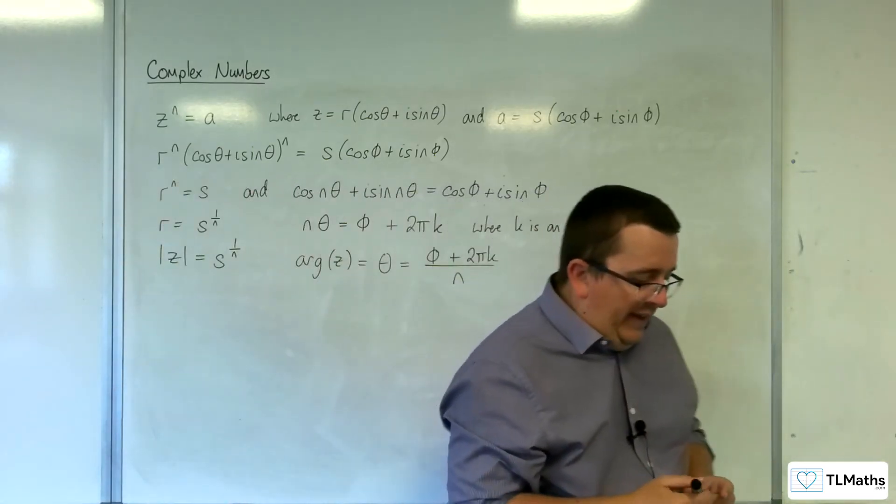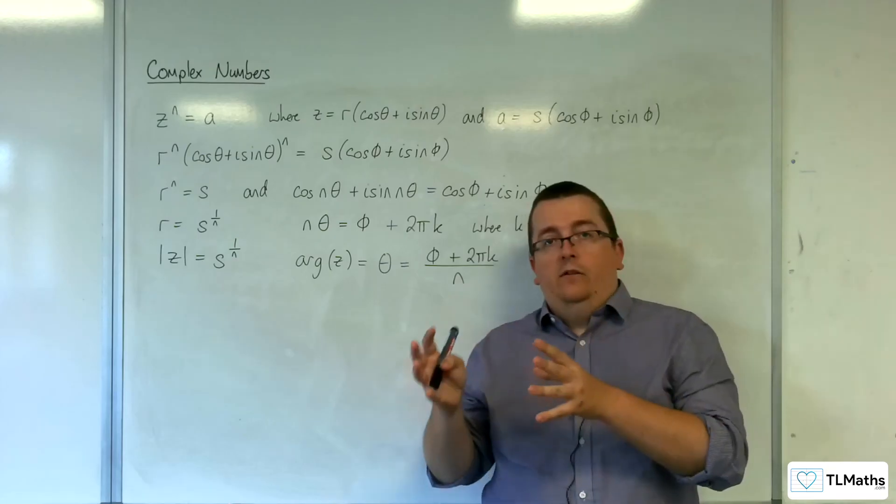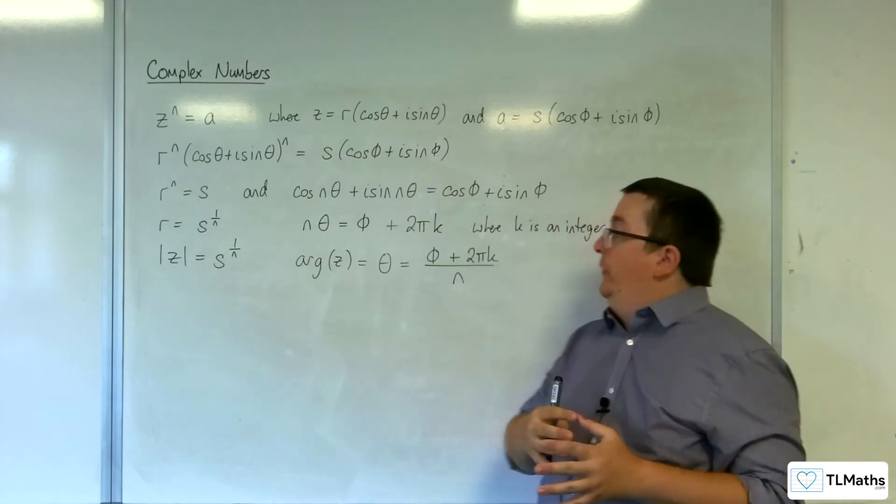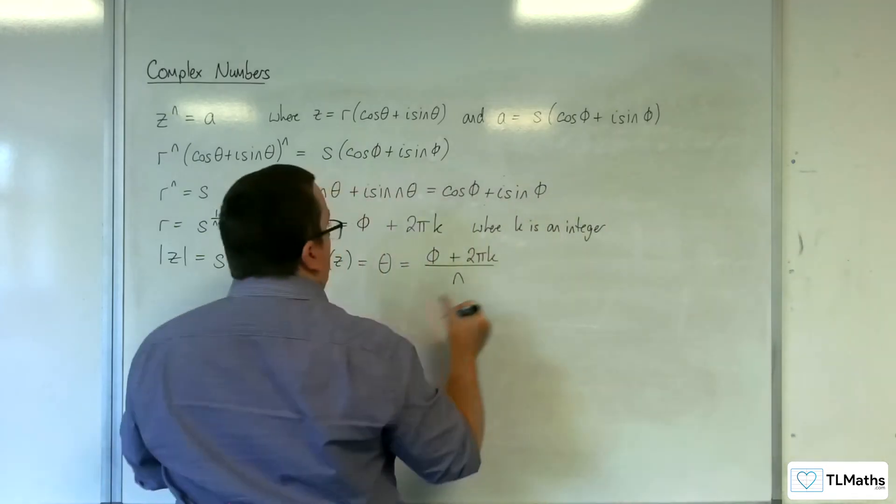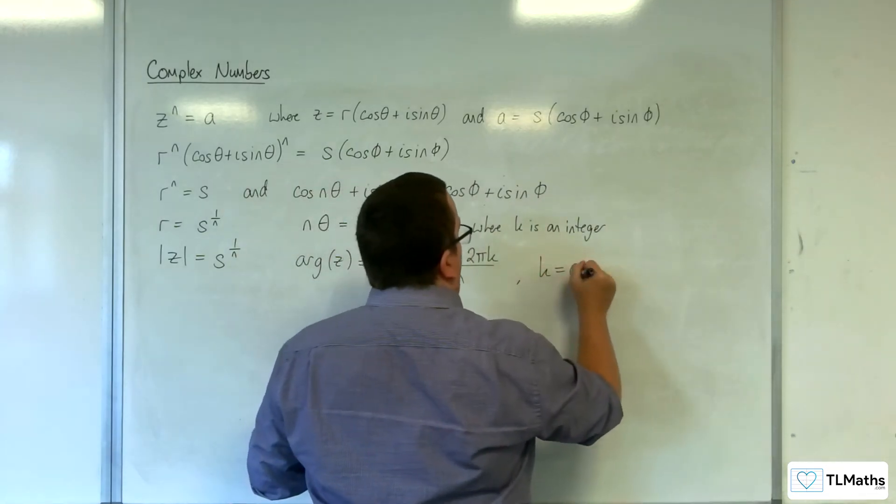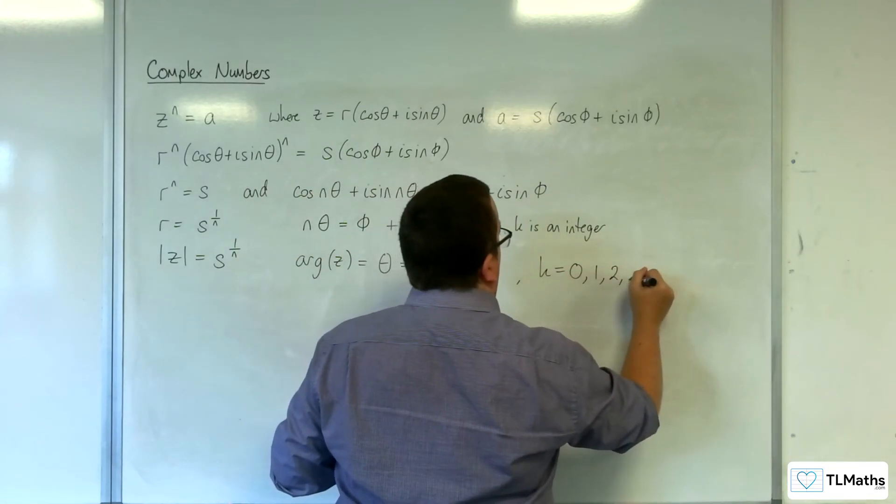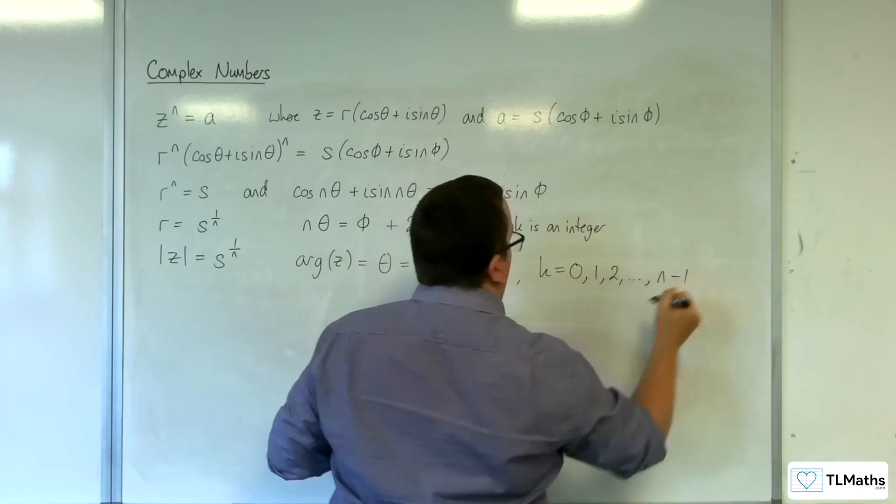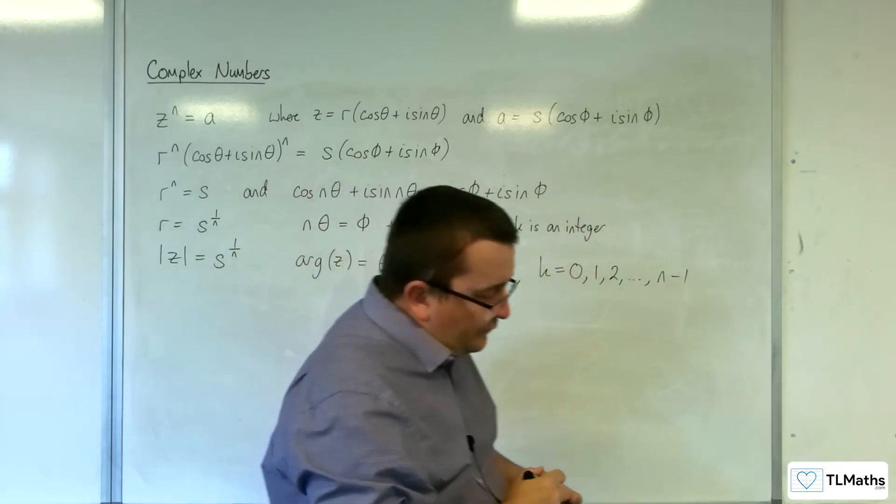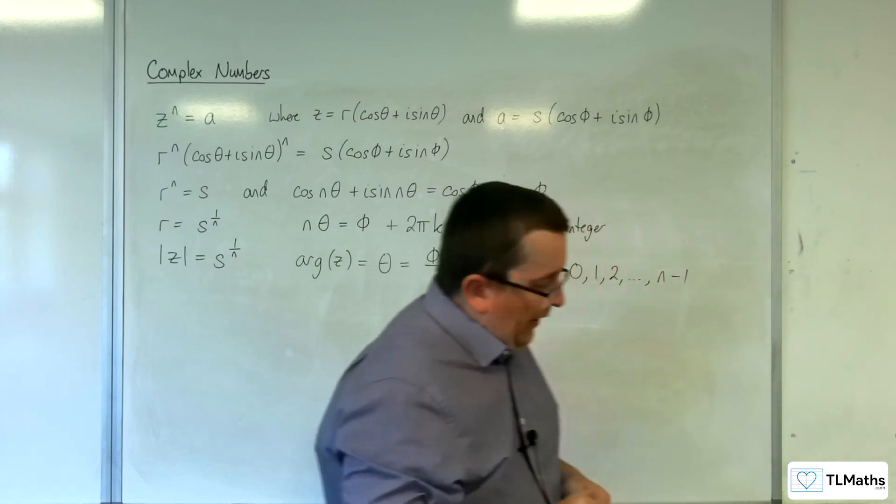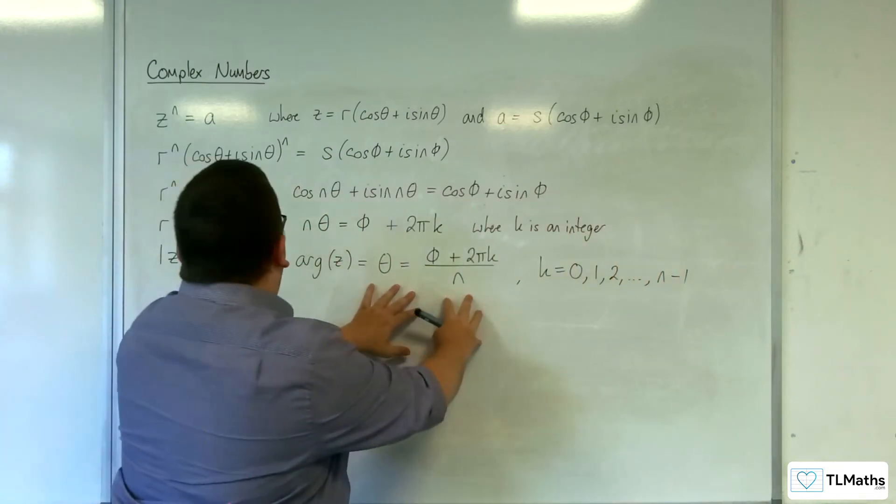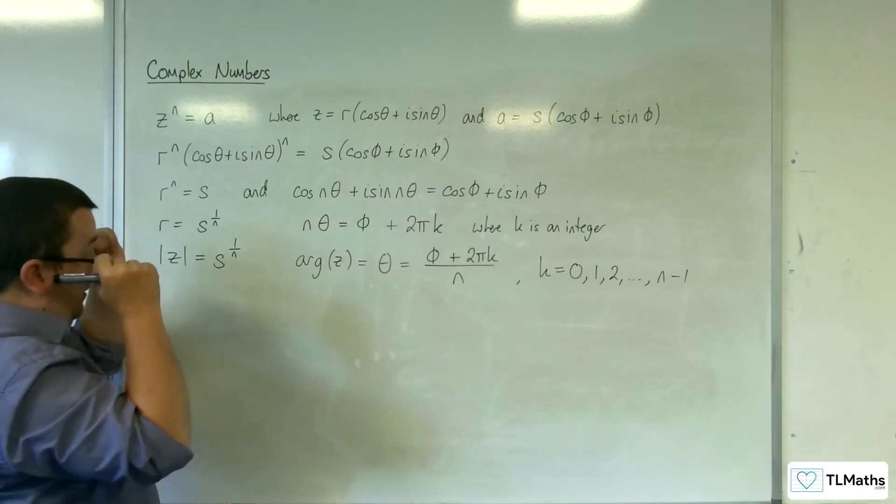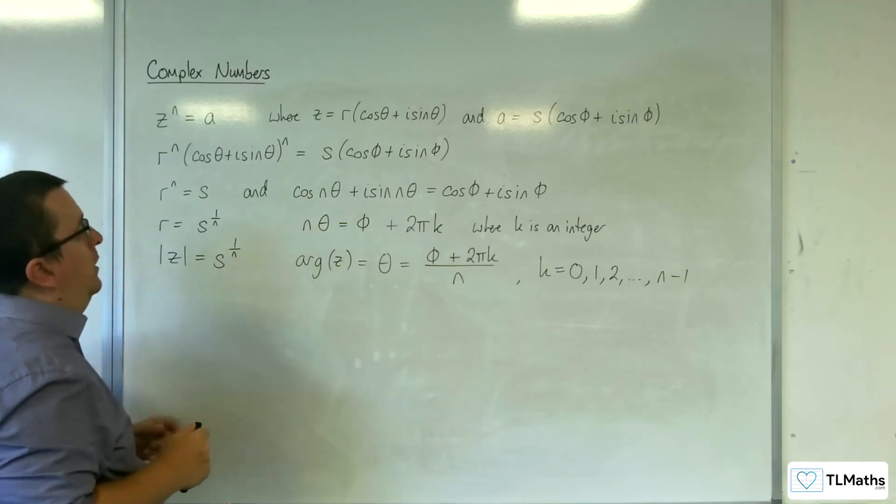And you're going to get n unique roots, where k is equal to 0, 1, 2, dot dot dot, up to n minus 1. And so that gives you the modulus and argument of our roots.